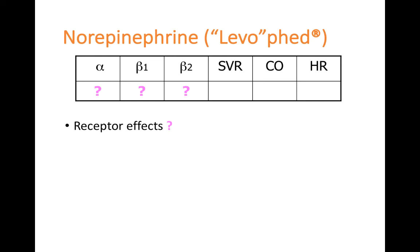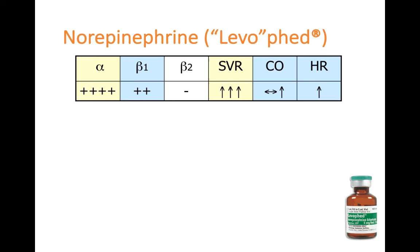Norepinephrine, brand name Levophed — commonly called 'Levo' — has very strong alpha effects along with some beta-1 activity. Based on its alpha activity, you expect to see an increase in SVR, and this is the most potent agent for increasing SVR. It also has some beta-1 effects, which can increase cardiac output and heart rate to some extent.